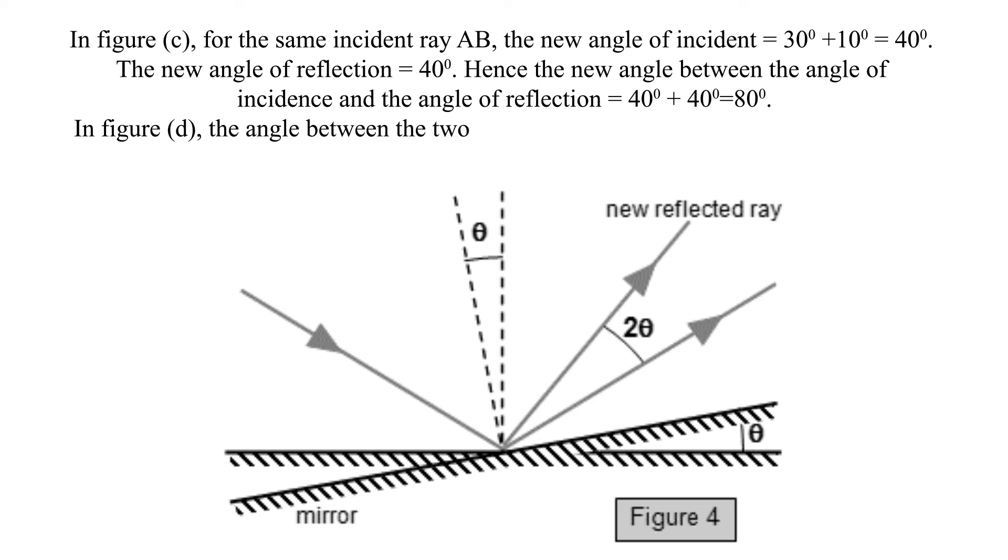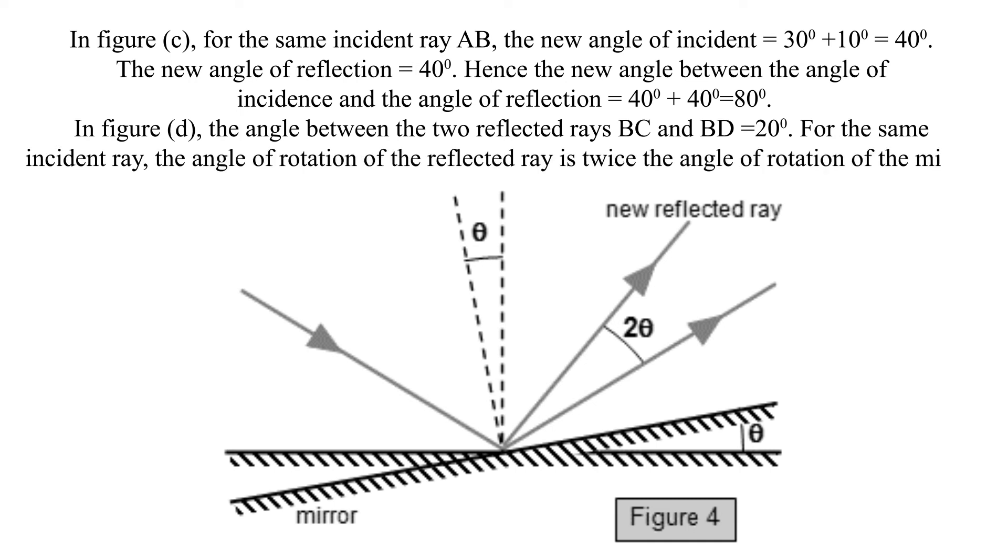In figure D, the angle between the two reflected rays BC and BD equals 20 degrees. For the same incident ray, the angle of rotation of the reflected ray is twice the angle of rotation of the mirror.